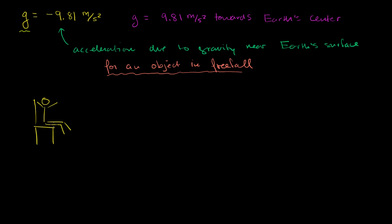If I were in free fall, I would be accelerating towards the center of the Earth at 9.81 meters per second squared. But what's happening is all of the force due to gravity is being completely offset by the normal force from the surface of the chair onto my pants. So the net force in my situation — especially in the vertical direction — is equal to zero, and because the net force is equal to zero, I am not accelerating towards the center of the Earth. I am not in free fall.